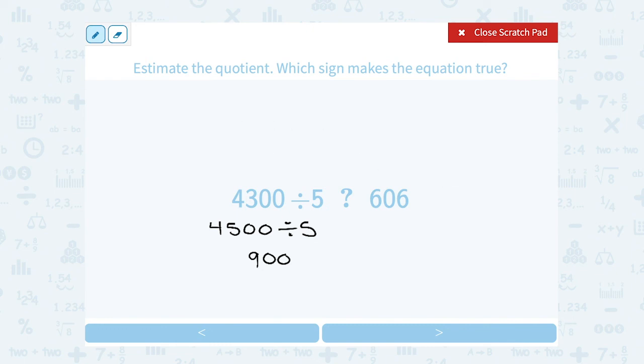Now, if you're not sure because you're like, wait, isn't 600 a little smaller? What you could do to make sure is say, okay, well, let me pick the number, another number that's easy to work with that's a little smaller. Let's try 4,000 divided by 5 and see what that gives us.